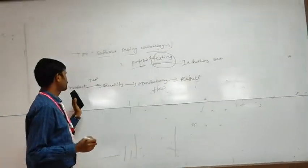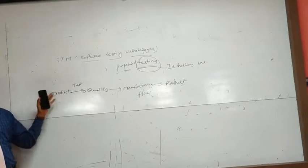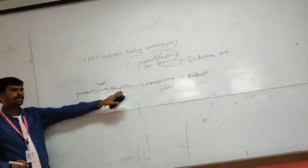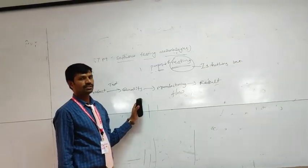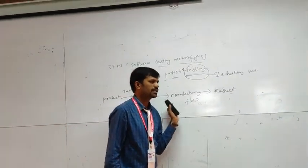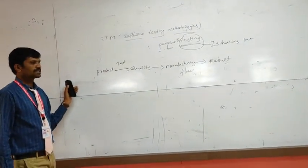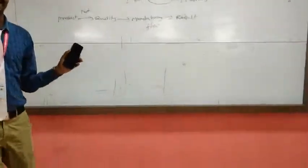This is for the product. We have to select one product, then test whether it is good or not. Next, concentrate on the product quality, follow the manufacturing flow, and then we get the result. This is for hardware. Next is software — we have to test that as well. This is for the course of testing.